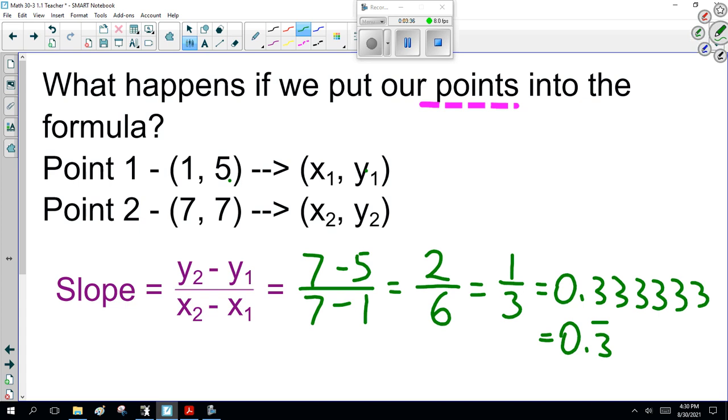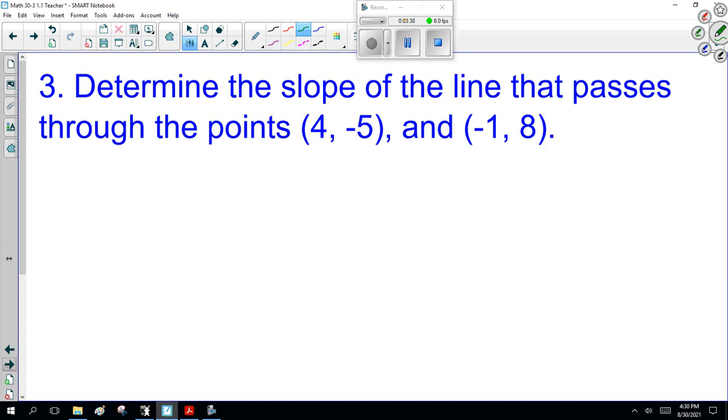Here, determine the slope of the line that passes through the points (4, -5) and (-1, 8).